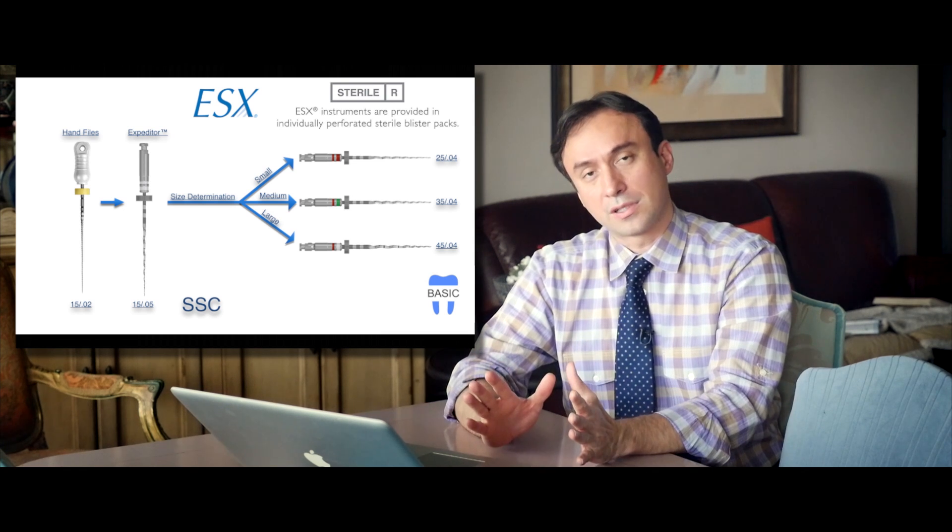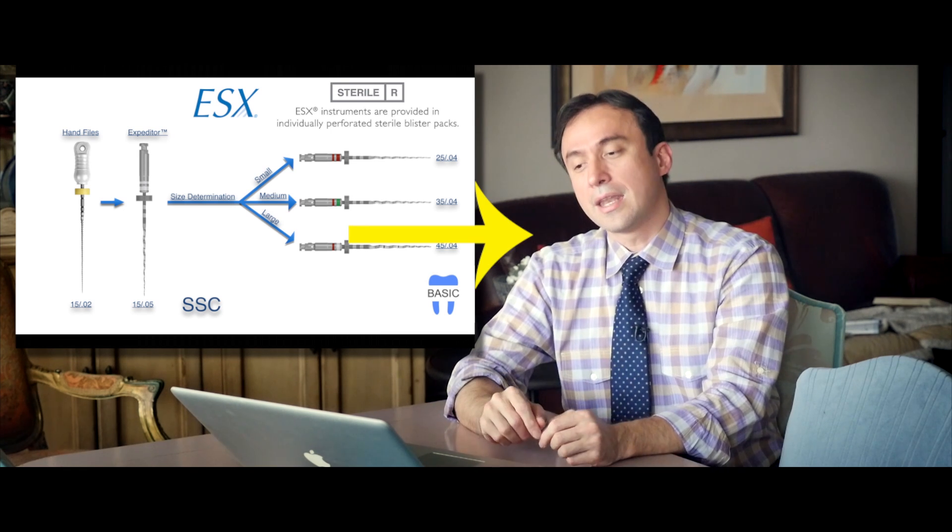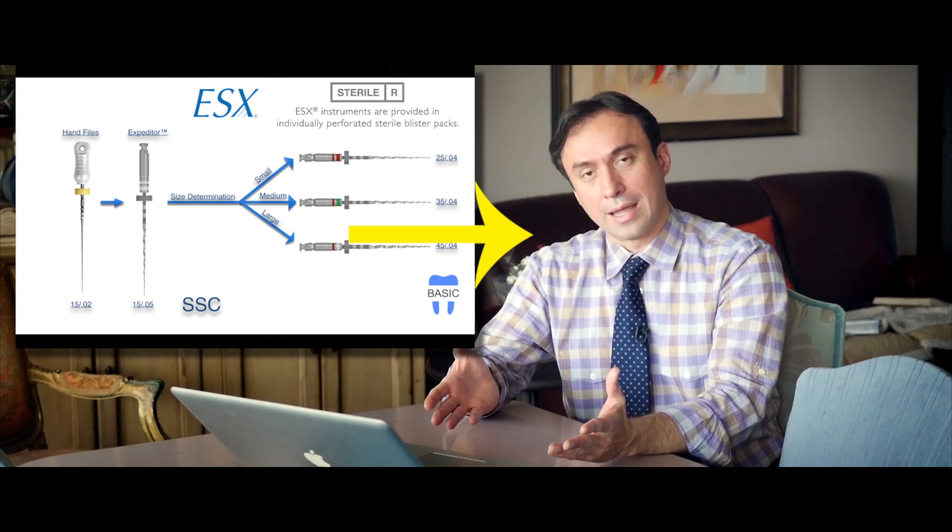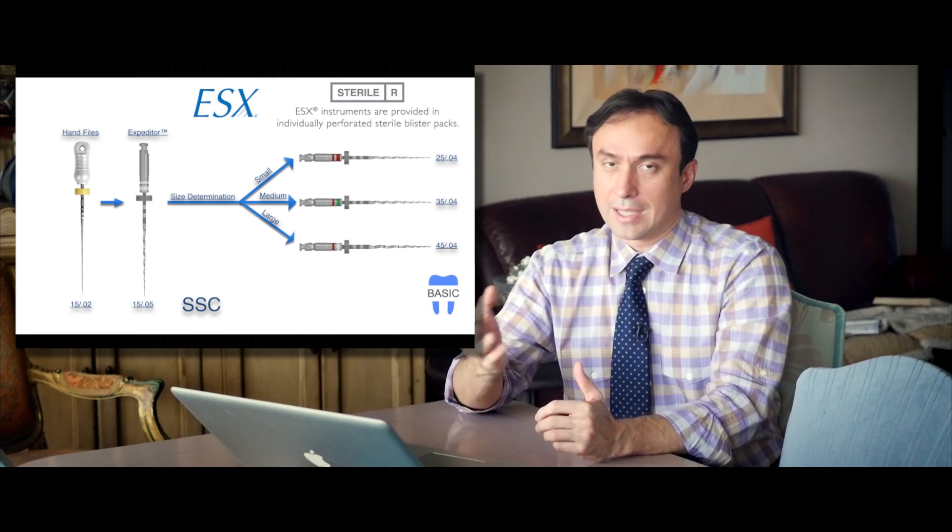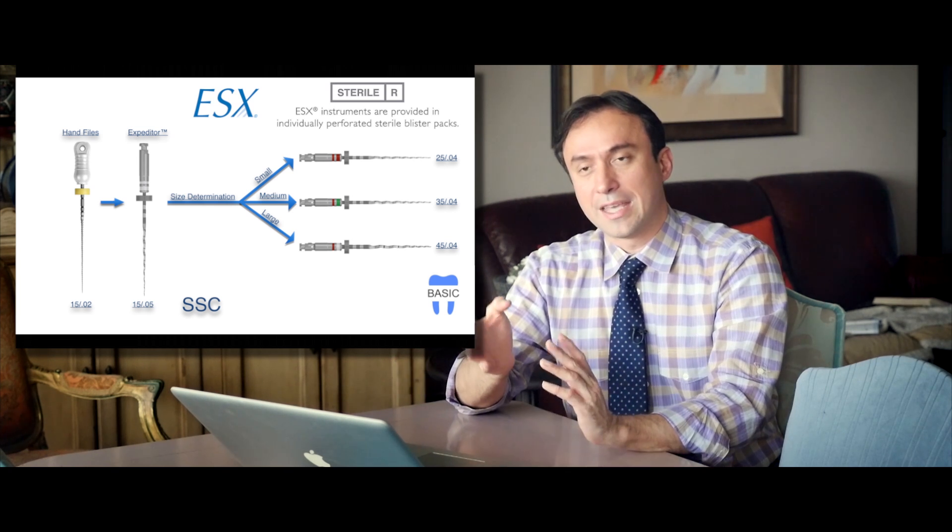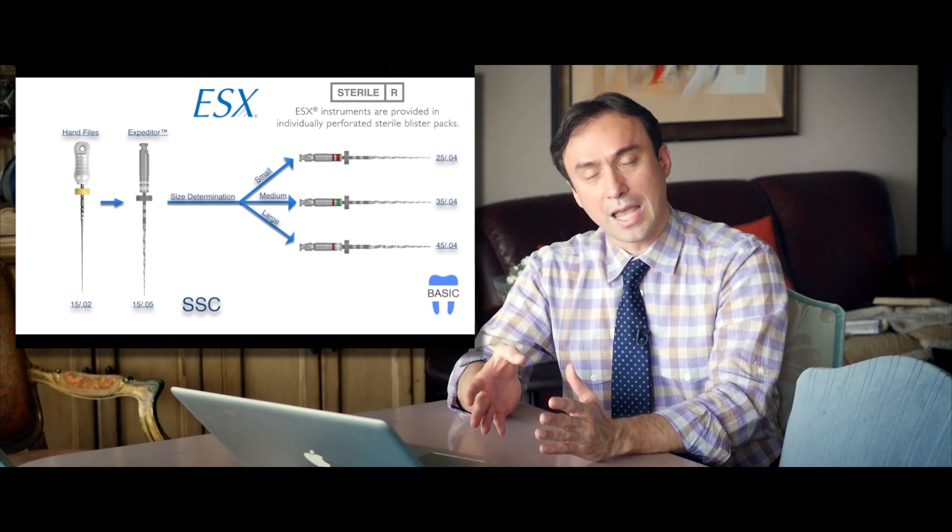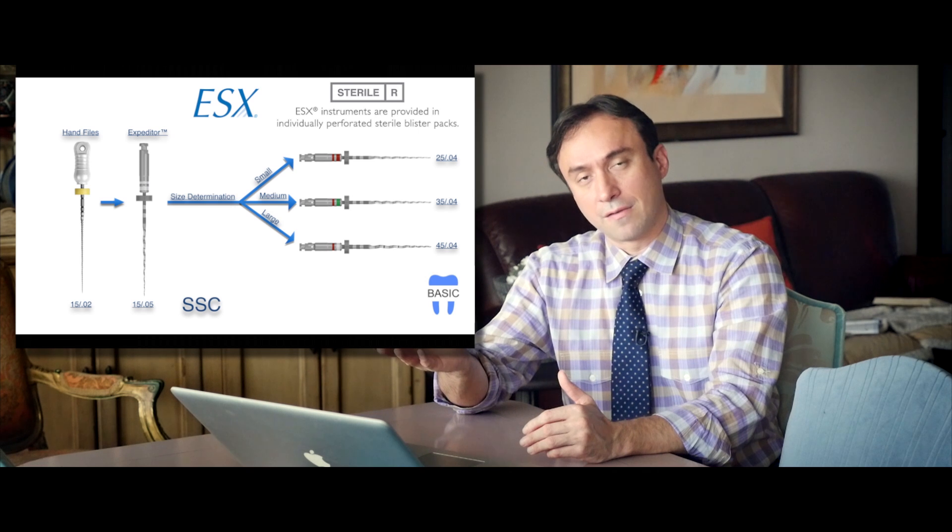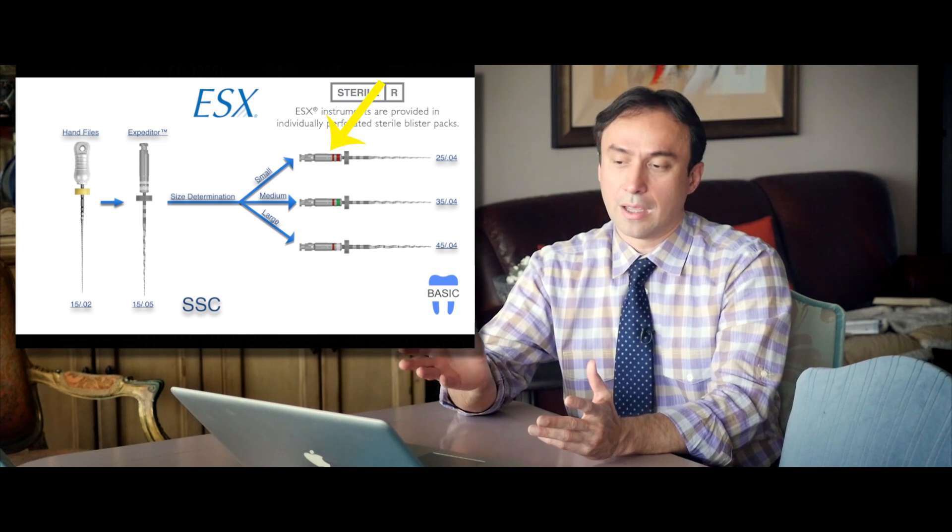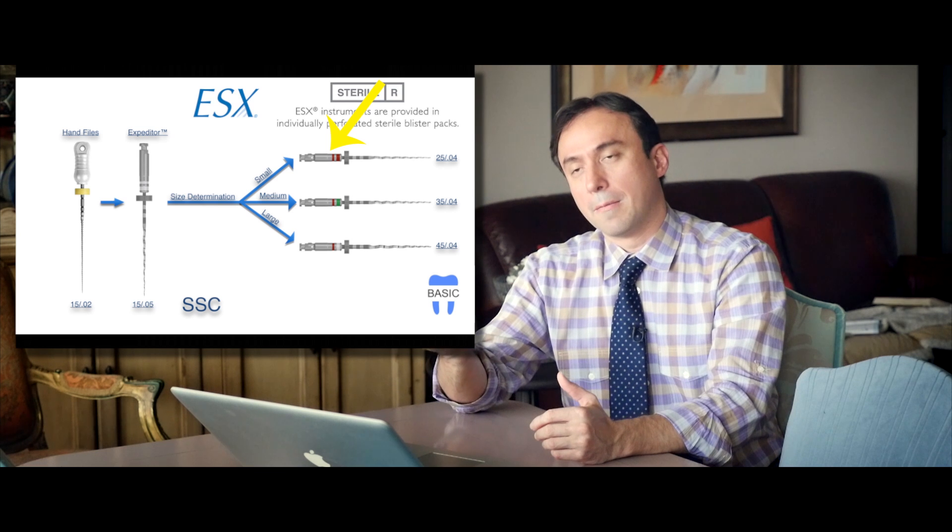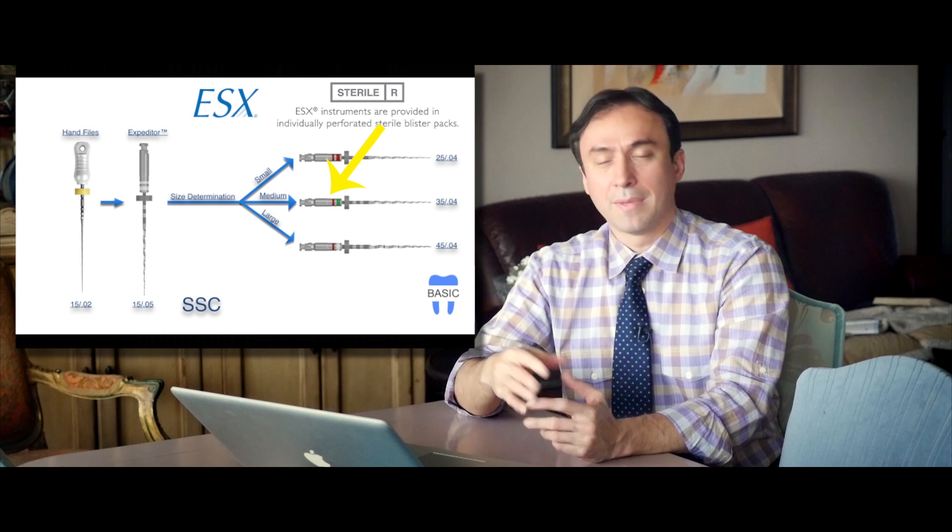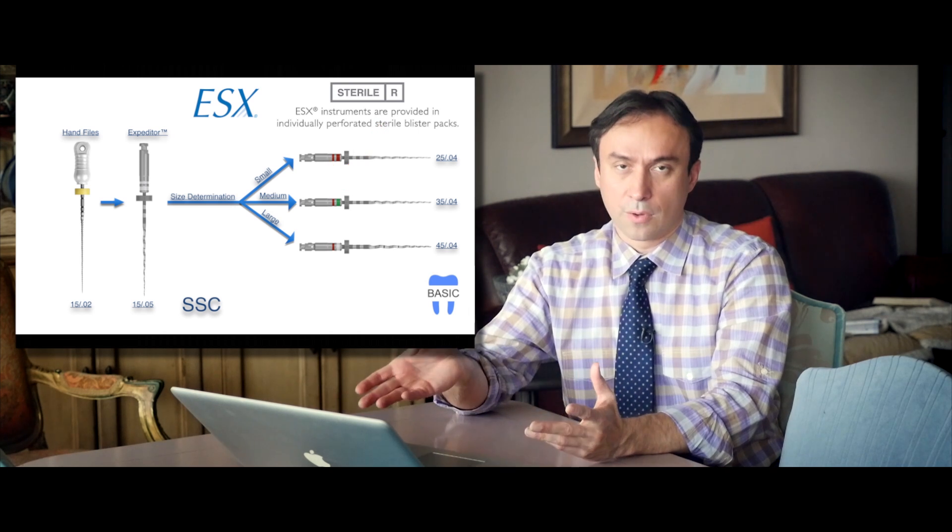Which involves getting the canal to a size 1502, then instrumenting it with the expediter down to the full working length using the SSC motion, and then based on the level of engagement that the expediter goes through on its way down to the apex, you would choose a given finishing file, either a size 25 for severe engagement by the expediter, mild engagement for the expediter results to a size 34, and minimal engagement goes to a size 45.